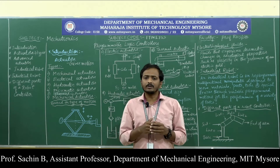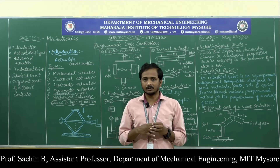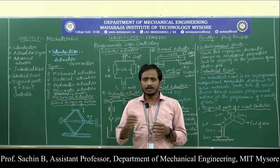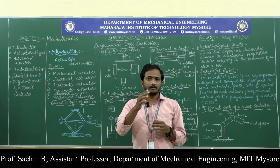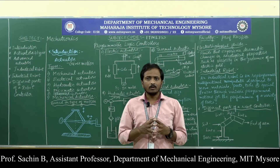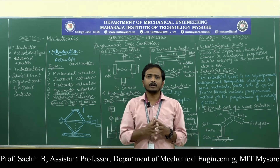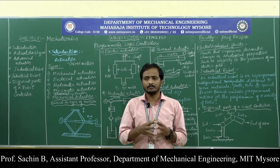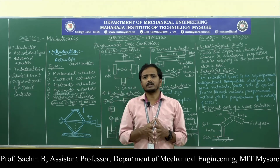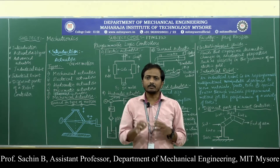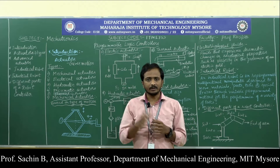In mechanical actuators — which you covered in Module 4 — you came across gears, cams, rack and pinion, ratchet and pawl mechanisms. These are all mechanical actuation systems where linear or rotary movement gets converted into some other form. Based on the source of energy, actuators are classified differently. Generally, actuators are classified into only two types: linear actuators and rotary actuators.